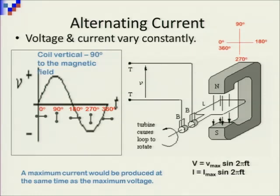Alternating current, you can have a look here. When the coil is at zero degrees, you will have no current. And when it is at 180 degrees, you will have no current. At 90 degrees and at 270 degrees, you will have maximum current. So, your graph is going to look like the one on your screen at the moment.